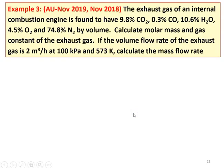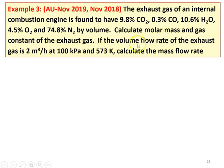Example number three. This question is from November 2019 and November 2018. The exhaust gas of an internal combustion engine is found to have 9.8% of CO2, 0.3% of CO, 10.6% of H2O, 4.5% of O2, and 78.4% of nitrogen by volume. Calculate the molar mass and gas constant of the exhaust gas. If the volume flow rate of the exhaust gas is 2 cubic meters per hour at 100 kPa and 573 K, calculate the mass flow rate.